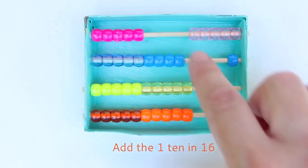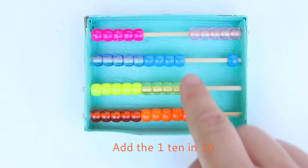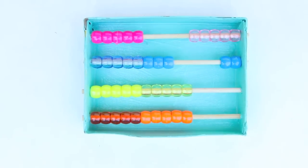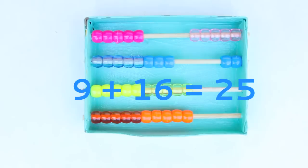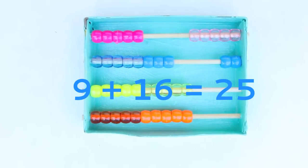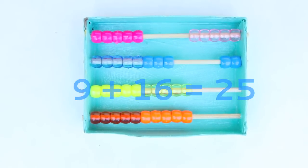Now we've added nine plus six and we just need to add the one ten in 16. Add that together and you have 25. And that's how you do simple math using an abacus. Enjoy.